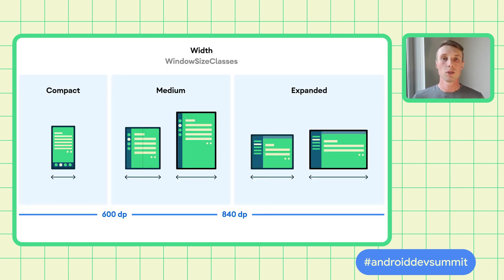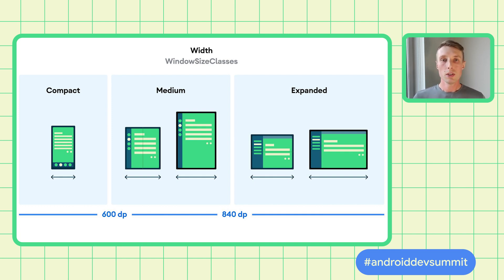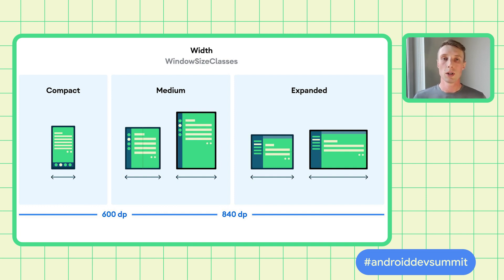Another key component to making your app intuitive for users on all device form factors is to provide different layouts. We've heard your feedback that knowing which screen sizes to develop for is difficult in our diverse device ecosystem. Now, Jetpack makes this easier than ever with window size classes. They are being introduced to provide opinionated layout breakpoints for you to know how to adapt your UI, and will be useful both when selecting layouts for different device types and when responding to window size changes in multi-window.